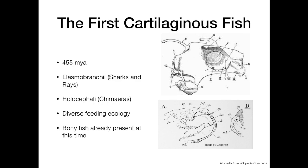With this taxonomic diversity came a great range of feeding ecology, with most elasmobranchs being predatory, but some, as well as the holocephalins, consisting of algal grazers and suction feeders.